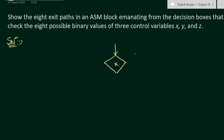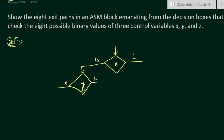When X is one it goes to the right side, and when X is zero it goes to the left side. For the X=0 path, we need to check Y using another decision box. When Y equals zero it goes one side, and when Y equals one it goes the other side.